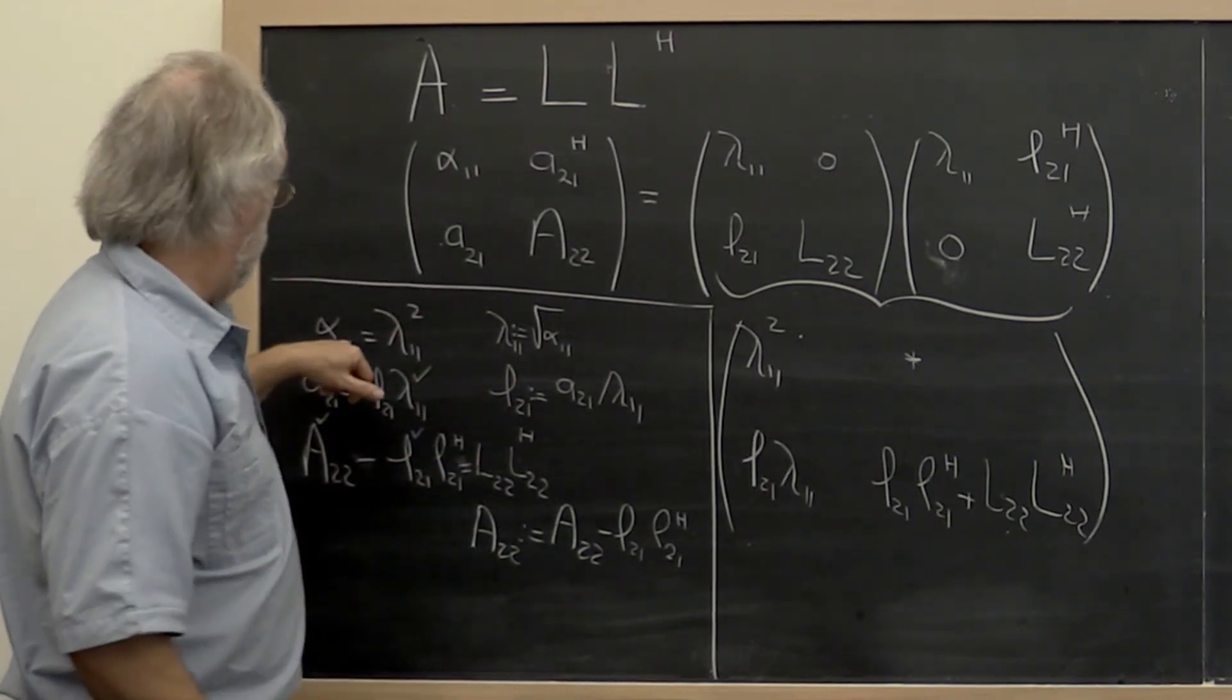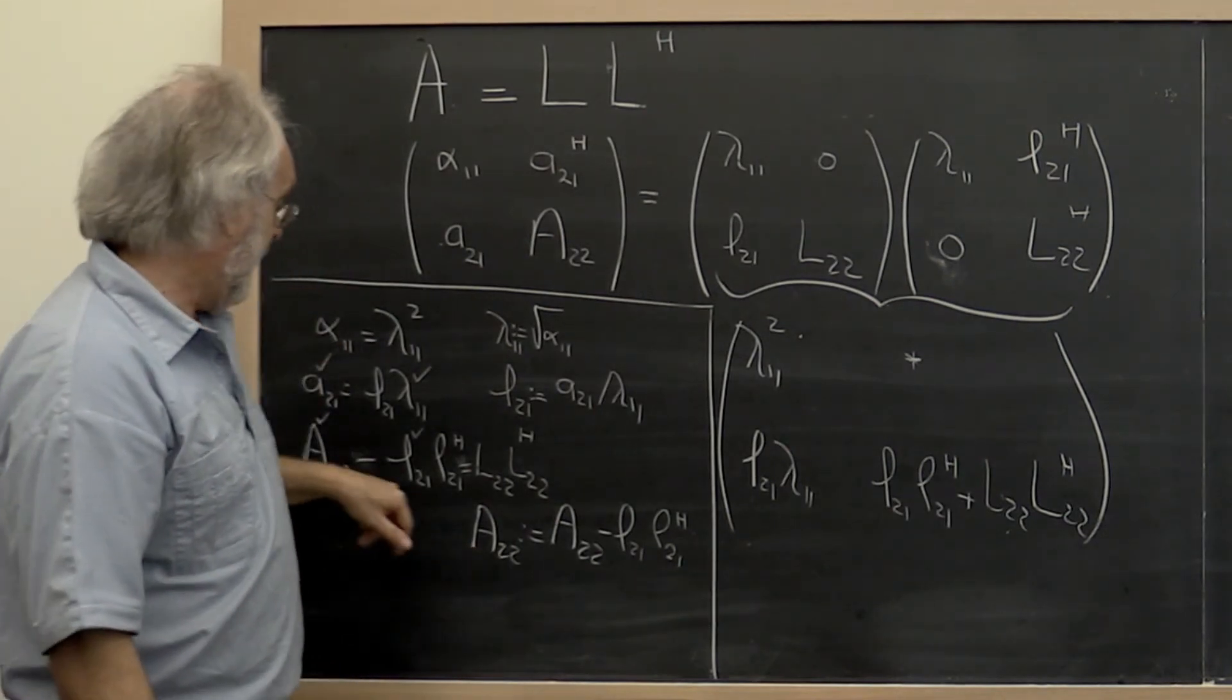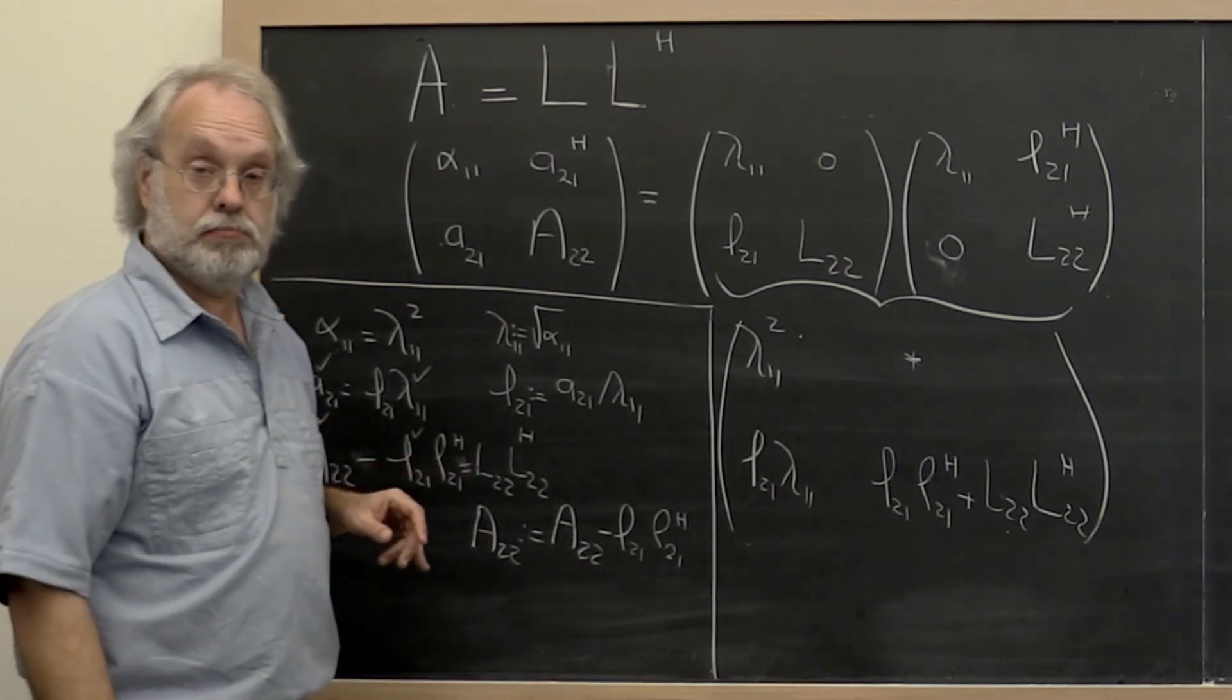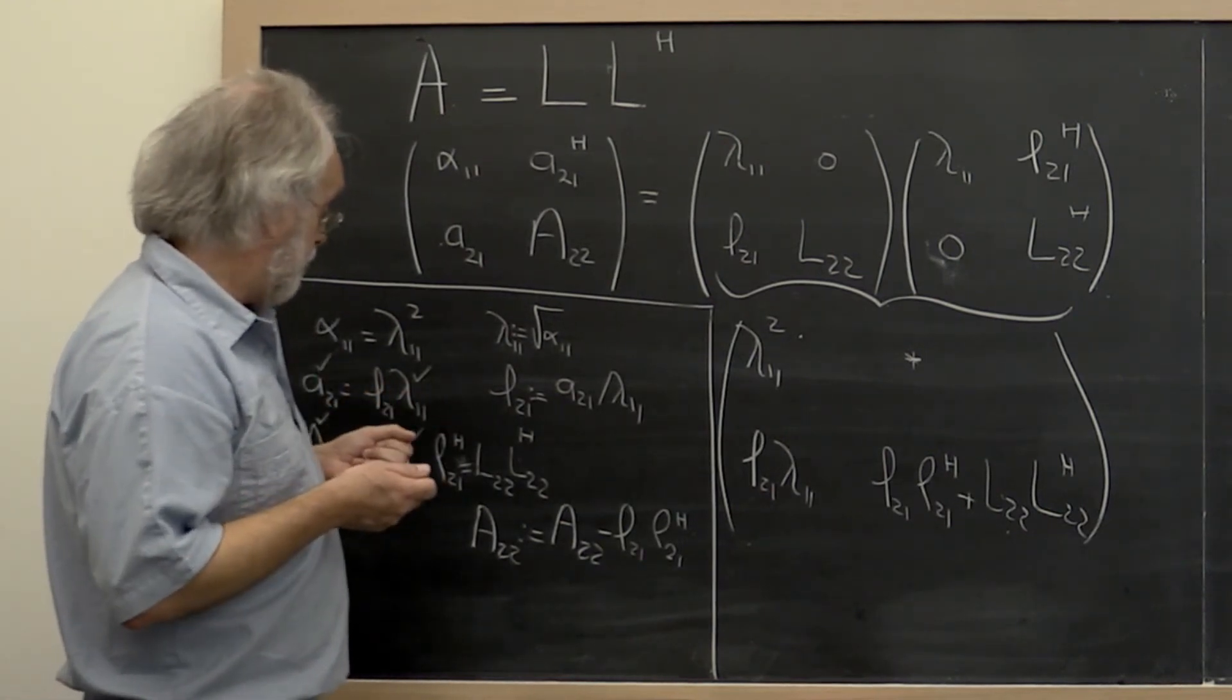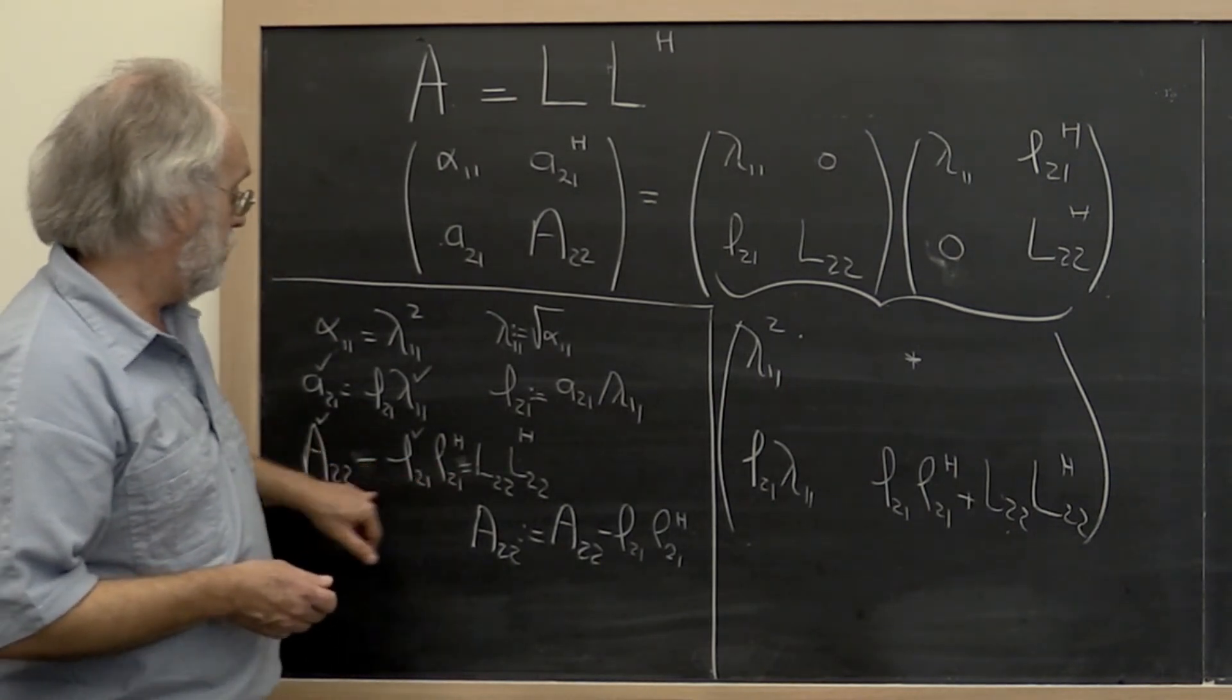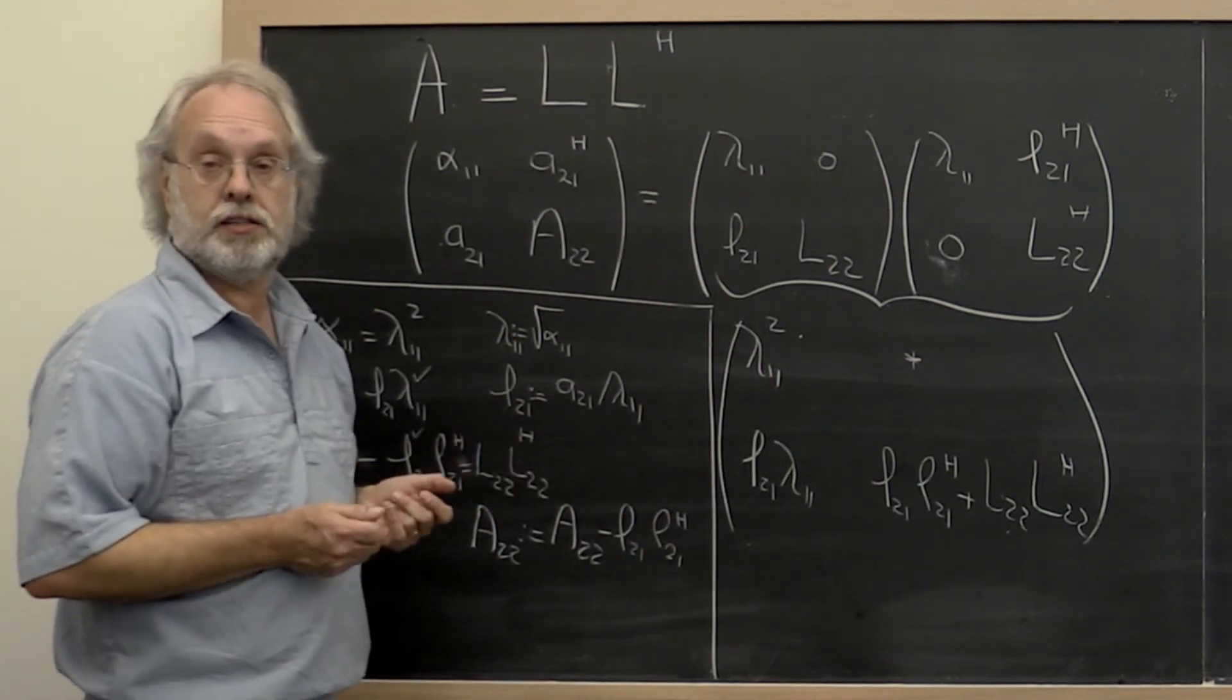Now, there's a couple of questions. One is, can we take the square root? And we sort of kind of answered that. The next question is, can we compute the Cholesky factorization of this updated matrix? And that's where the proof comes in. Namely, we're going to have to prove that this matrix is again Hermitian positive definite so that we can move on to the next step.